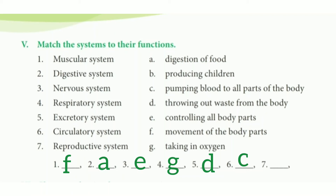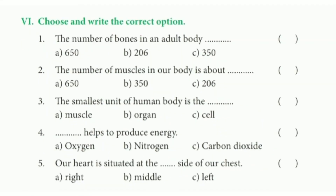For the choose-and-write section: Number 1 — the number of bones in an adult body is 206. Number 2 — the number of muscles in our body is about 650. Number 3 — the smallest unit of the human body is a cell. Number 4 — oxygen helps to produce energy. Number 5 — our heart is situated at the left side of our chest.